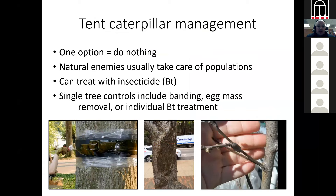What do we do about tent caterpillars? One option is to do nothing — natural enemies like other insects, birds, and mice eating pupae will often take care of populations. You can treat with an insecticide. For Lepidoptera, you can use Bt (Bacillus thuringiensis), which kills only Lepidoptera and won't harm spiders or beetles. For single tree control, you can clip off egg masses with pruners or band the tree. Chemical treatment is rarely needed for these things.